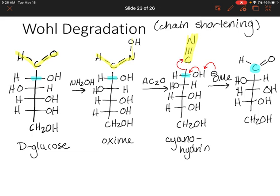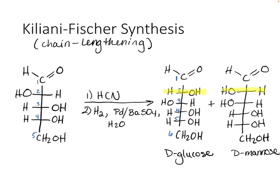What's nice about the chain shortening reaction is you only have one product. But the yields for this Wohl degradation are not super high. It is nice to be able to just end up with one product, whereas in the Kiliani-Fischer synthesis, we end up with two products, which can be kind of messy and difficult to separate.